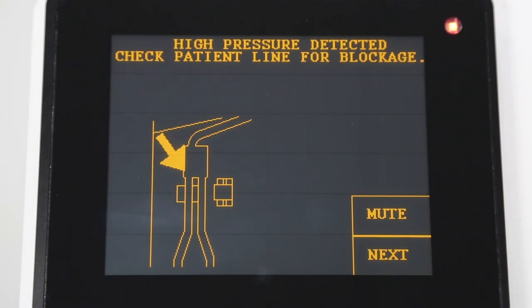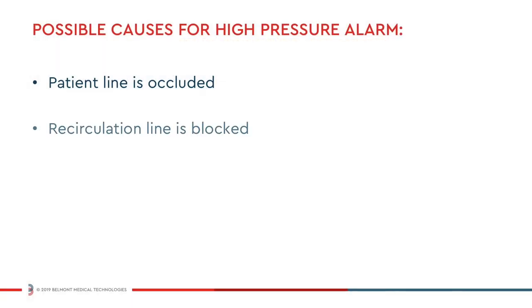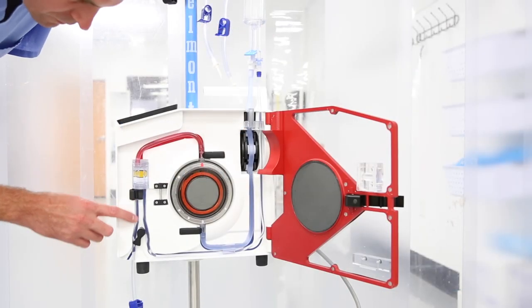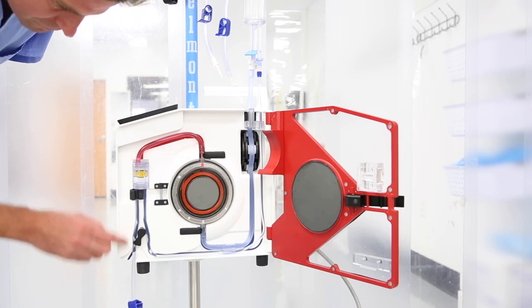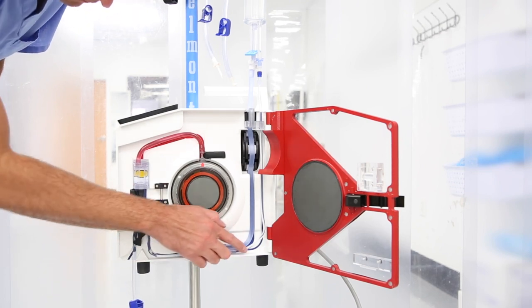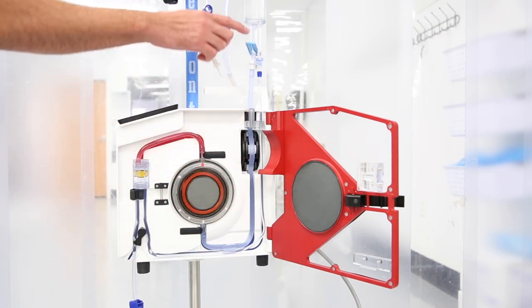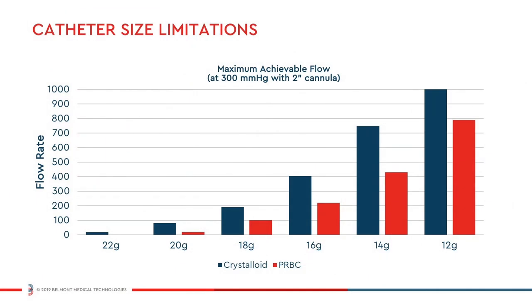A high pressure alarm will sound if the patient line is occluded, the recirculation line is blocked, or the infusion site is not well placed. In this situation, you should inspect the patient and recirculation lines to make sure that the flow path is not blocked. Check to see that the catheter is not too small or too long, and ensure all tubing between the Belmont RI2 and the patient's catheter is able to support the selected infusion rate.